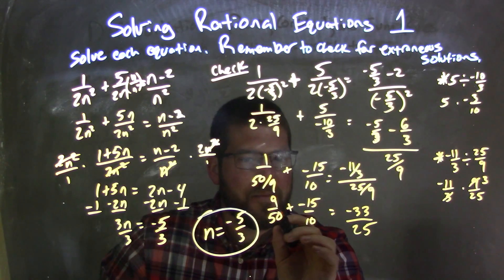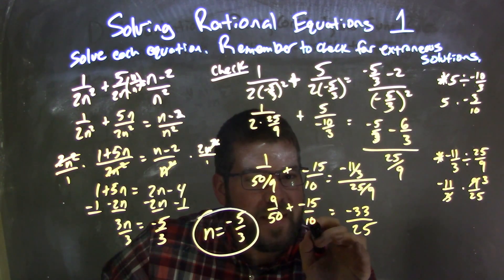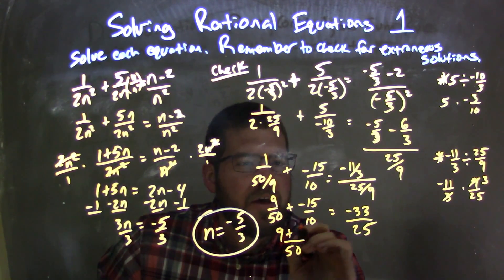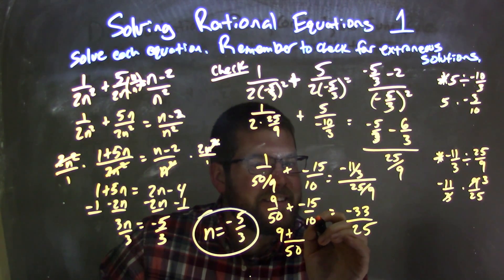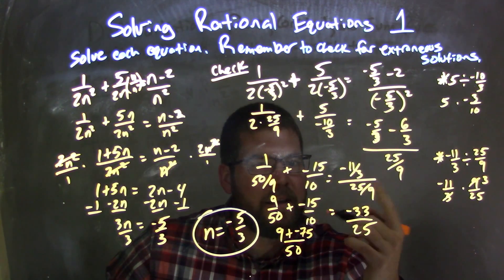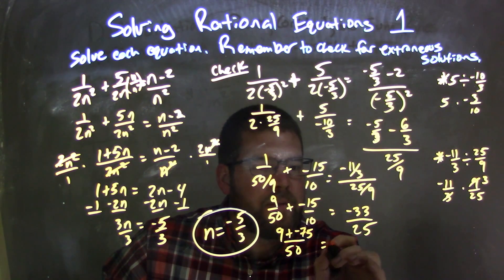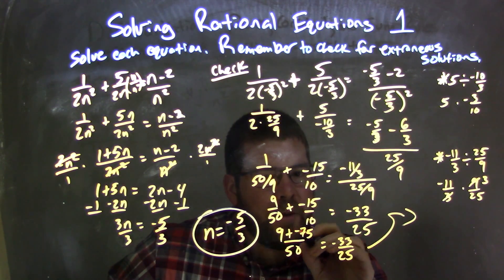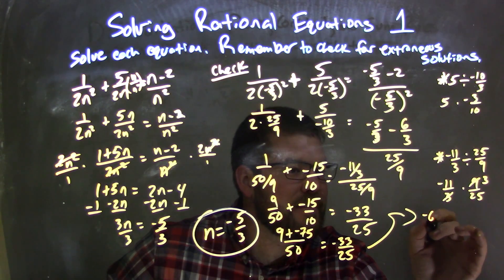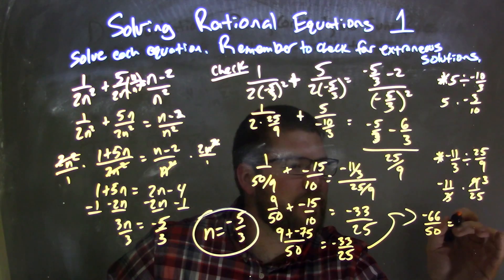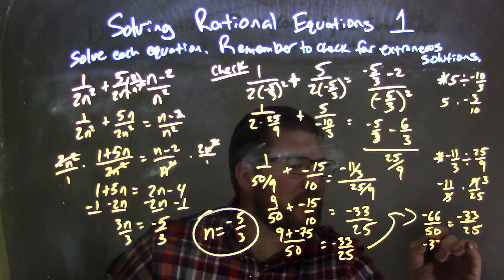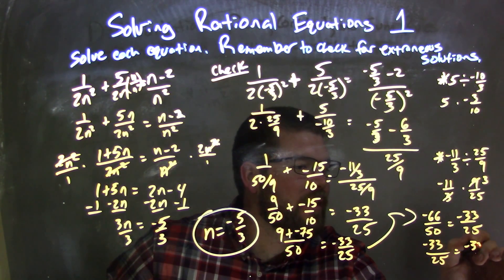Now we rewrite the left side with a common base. Multiplying 9 over 50 and negative 15 over 10 — converting to a denominator of 50 gives negative 75 over 50. So we have 9 plus negative 75 over 50, which equals negative 66 over 50. Dividing both numerator and denominator by 2, negative 66 over 50 simplifies to negative 33 over 25, which equals negative 33 over 25.